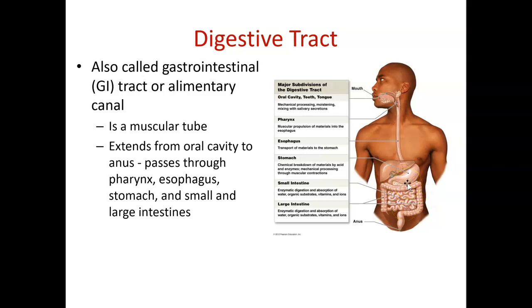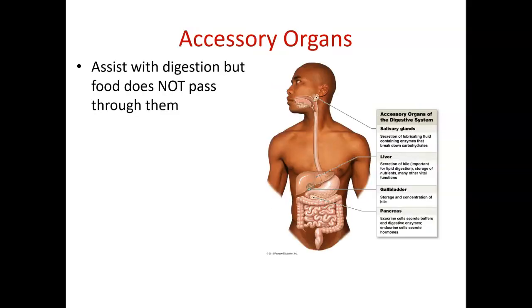There's stuff we eat that we don't absorb that basically comes out the other end — if you've had corn, or if you have children who've ever swallowed a crayon, you've seen this firsthand. The accessory organs are important for digestion, but food does not pass through them. Accessory organs include salivary glands, the liver, the gallbladder, and the pancreas, and we'll discuss their importance in later lectures.